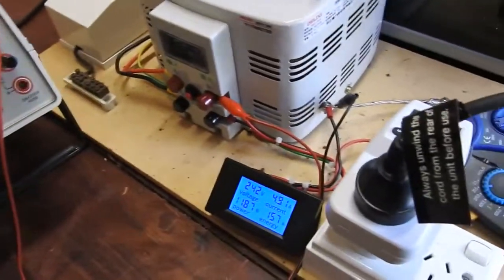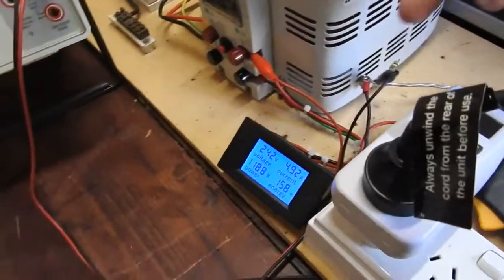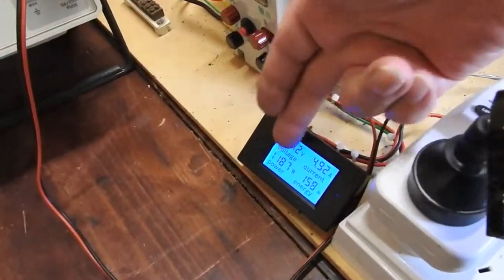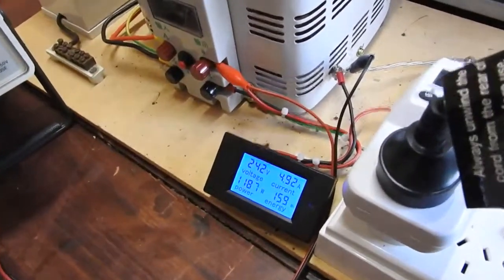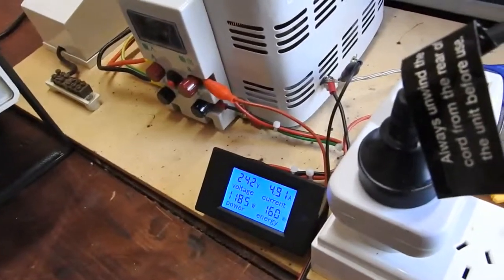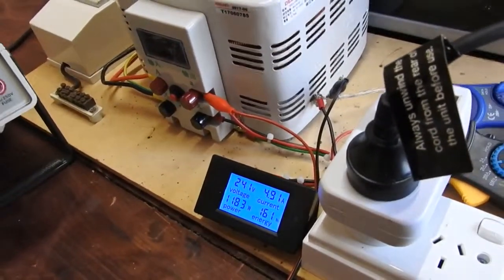So voltage wise it seems pretty accurate there. But current I can't be sure. So I might as well trust that. I mean, the voltage is good. For the moment I'll trust the current. It's not a bad thing by the look of it. I think they're about $11.